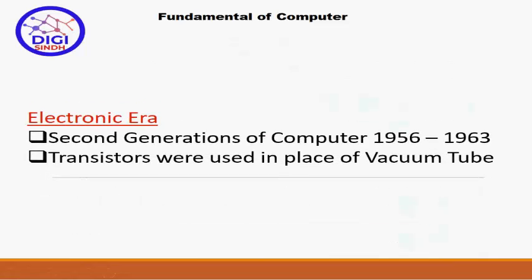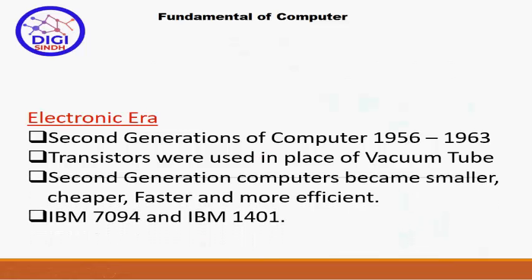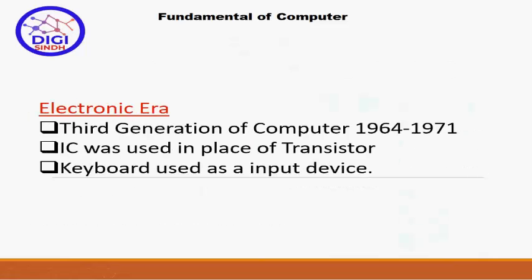Second generation of the computers کا time period 1956 سے 1963 تک کا ہے۔ اس میں vacuum tube کی جگہ transistors کو استعمال کیا گیا۔ Second generation کے computers size میں پہلی generation کے بنسبت چھوٹے، cheaper، data process کرنے میں faster، اور more reliable ہوا کرتے تھے۔ اس generation کے notable computers IBM 7094 اور IBM 1401 ہیں۔